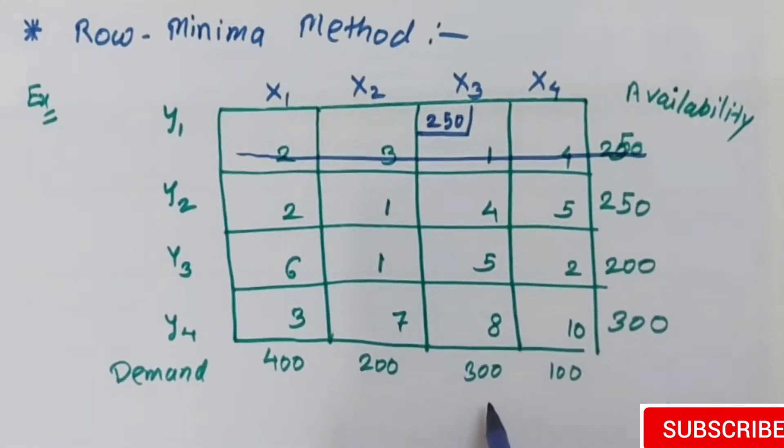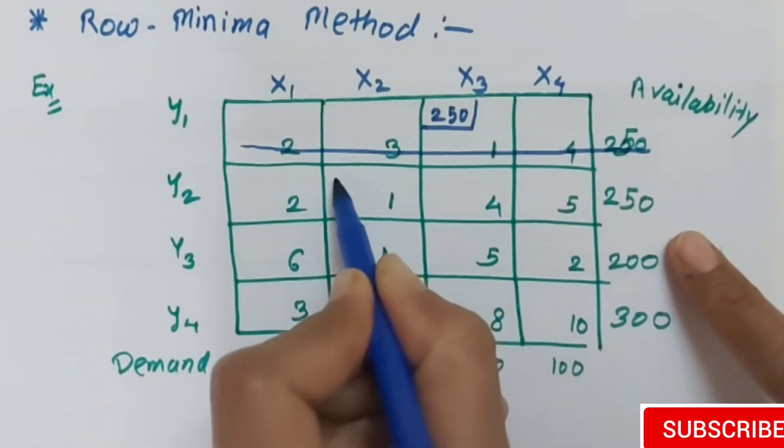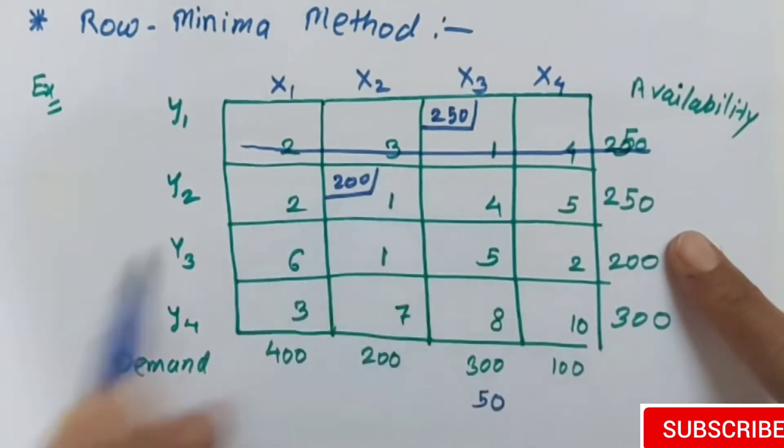We subtract from 300, so here remains 50. For the second row, check the minimum value and assign correspondingly. If we compare, 200 is assigned.